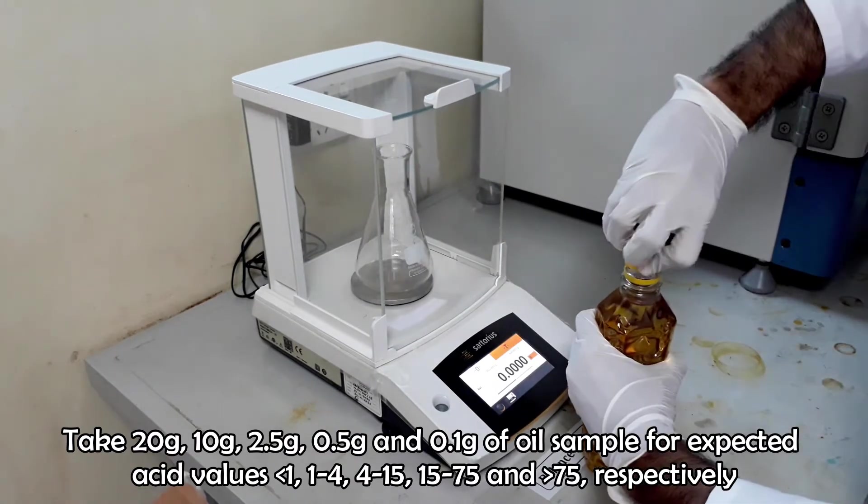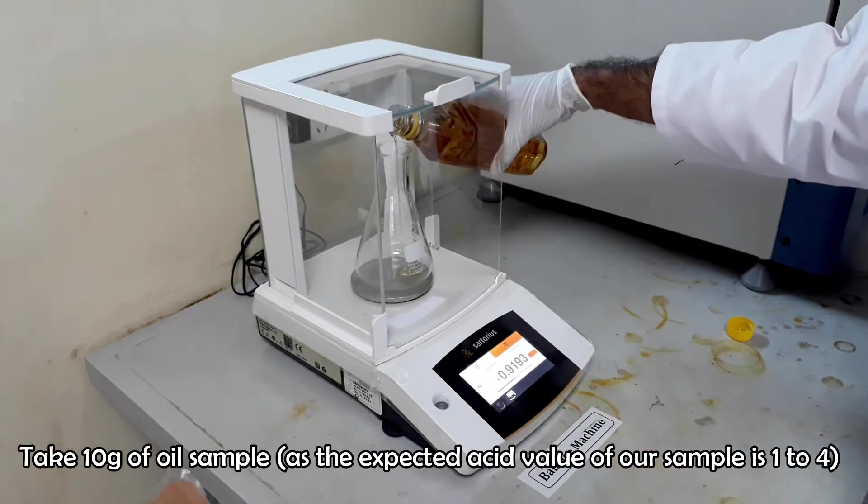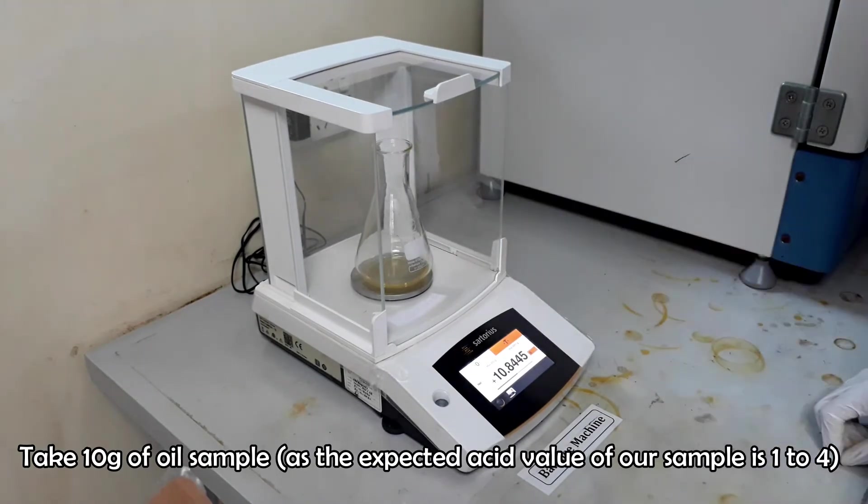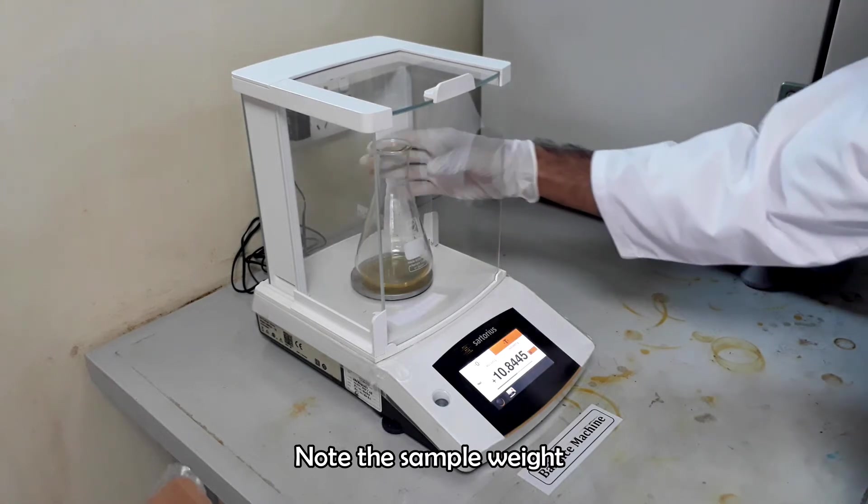Take 10 grams of oil sample in a conical flask. 10 gram sample is taken for testing because the expected acid value of our sample is in the range of 1 to 4. Note the sample weight.